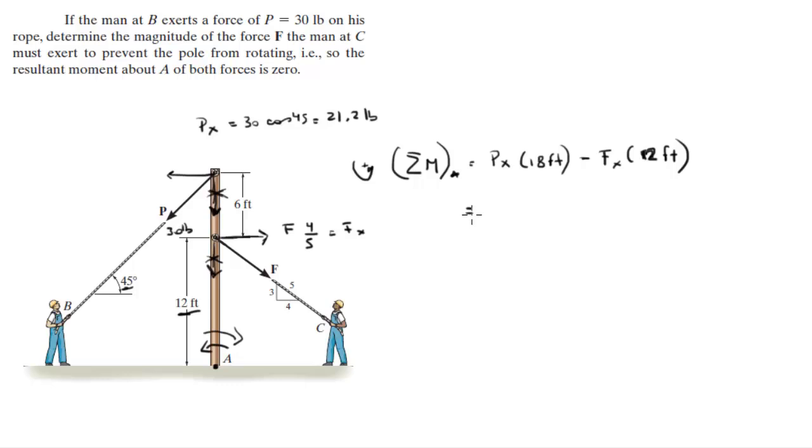So you plug in the value, replace the P_X and the F_X, and you get that this is 21.2 times 18 feet minus 4 over 5, which is 0.8 F, times 12 feet. And you want the post to be perfectly still so there's no moment, so this has to be equal to 0.